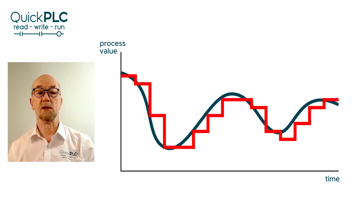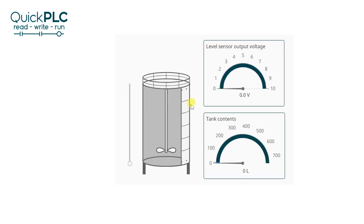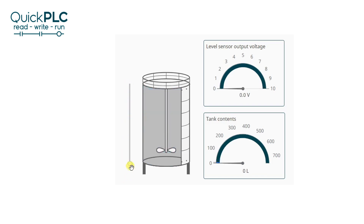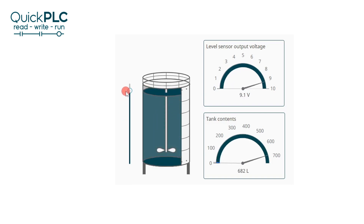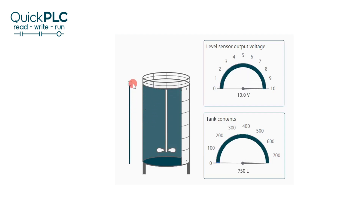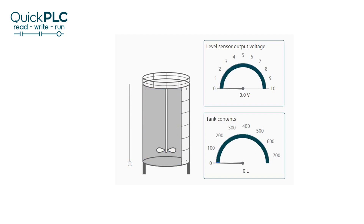Our first example is a tank level sensor — this could be ultrasonic, laser, or some sort of potentiometer arrangement — to give an analog signal of 0 to 10 volts for 0 to 750 liters of tank capacity. In this case the sensor has been calibrated with zero output when the tank is empty and 10 volts output when the tank is full, making our conversion very easy. The tank has a uniform cross-sectional area, so the 0 to 10 volt analog signal will be directly proportional to the volume in the tank.